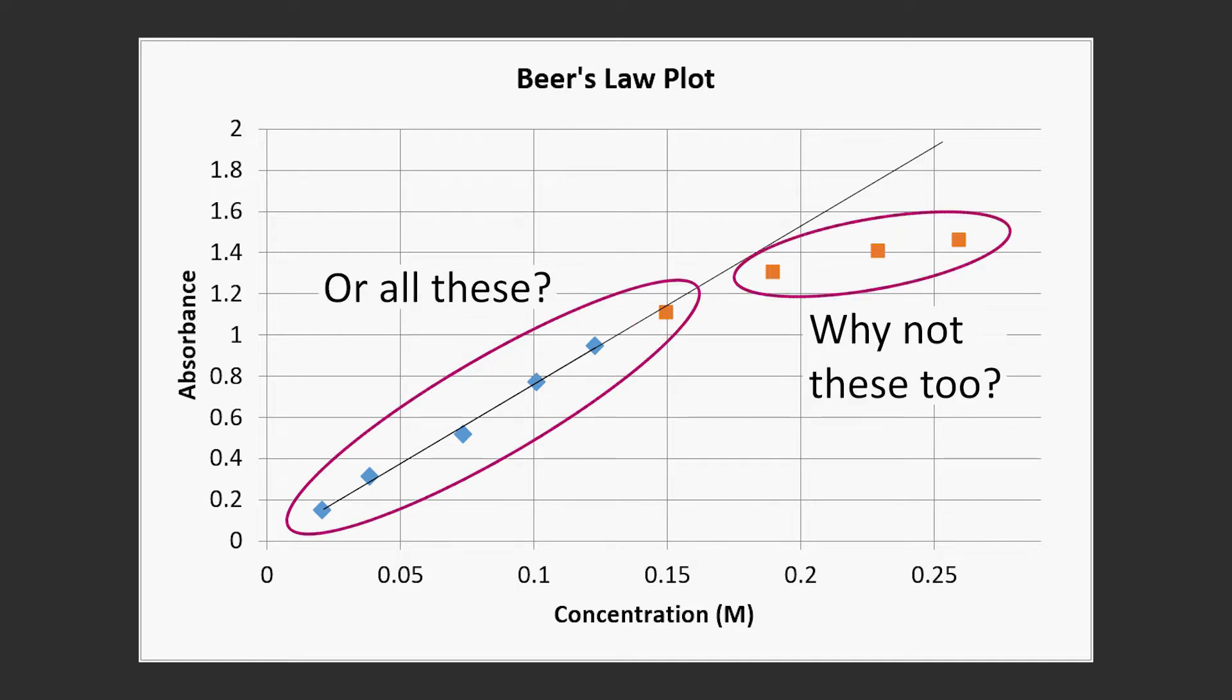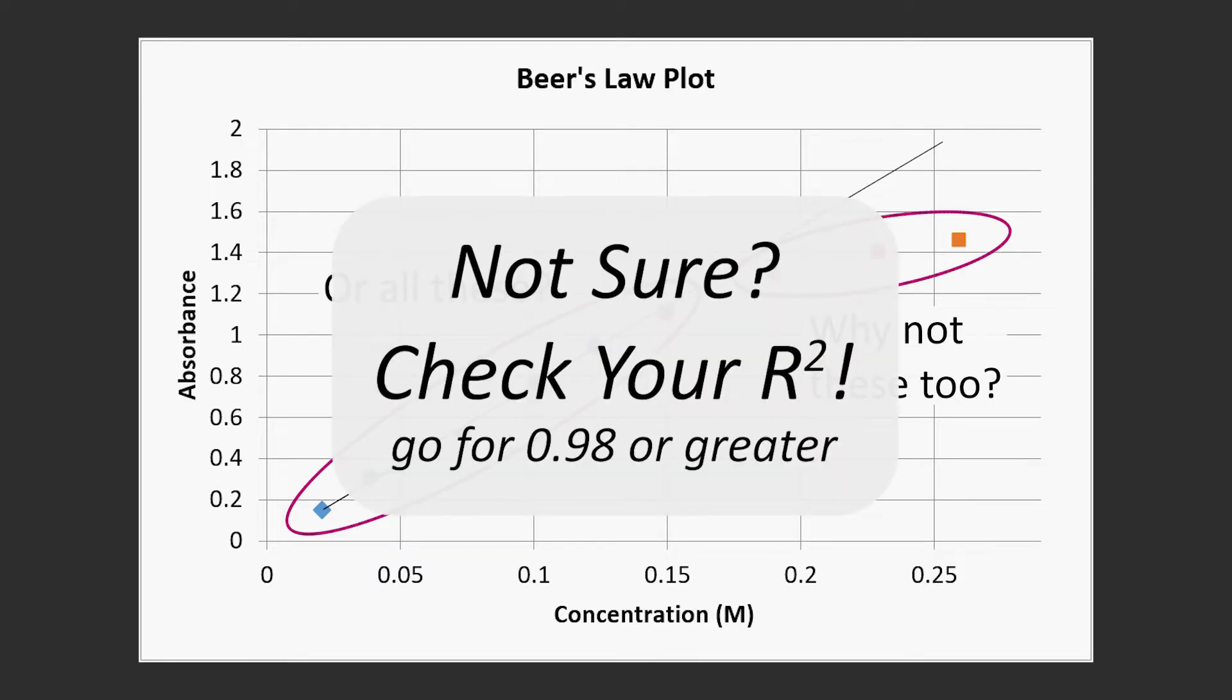If you're not sure which to leave in and which to leave out, check your plot's R squared value. This way you can be reasonably sure your line is good enough to determine the concentration of an unknown solution.